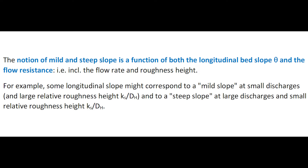The notion of mild and steep slope is a function of both the longitudinal bed slope, theta, and the flow resistance, including the flow rate and roughness height. For example, some longitudinal slope might correspond to a mild slope at small discharges and relatively large roughness height, and the same longitudinal slope might correspond to a steep slope for large flow rates and associated small relative roughness height.